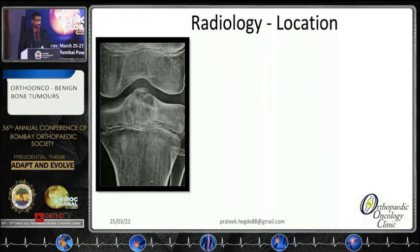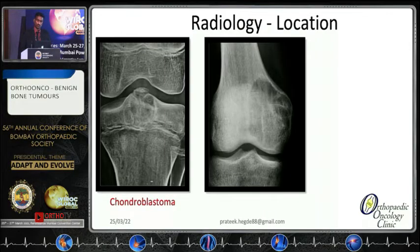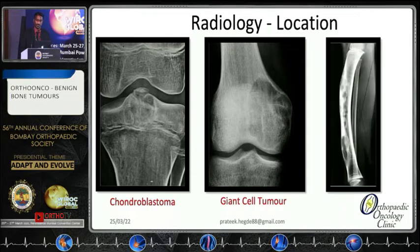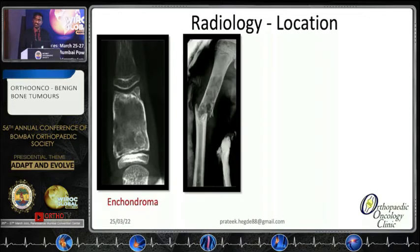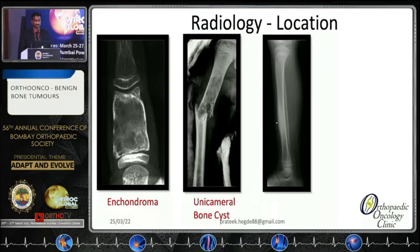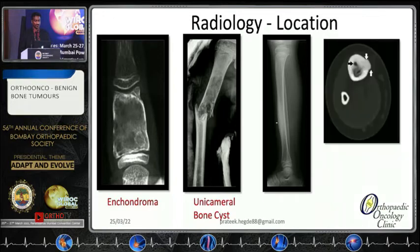A few examples: an epiphysial lesion in a growing child is very classical of chondroblastoma. Epiphysial, elderly, eccentric — giant cell tumor. Cortical lesions in a tibia spread throughout — osteofibrous dysplasia. A finger lesion, expansile, with scalloping and ring-and-arc calcifications — enchondroma. A pathological fracture in a lytic lesion showing the fallen fragment sign — unicameral bone cyst. A cortical lesion which on CT shows the nidus — osteoid osteoma.